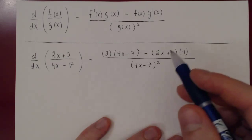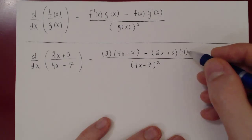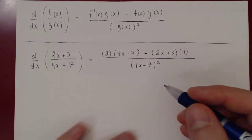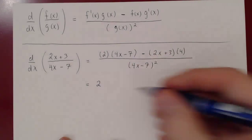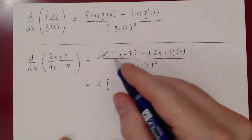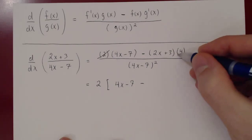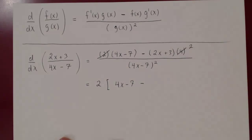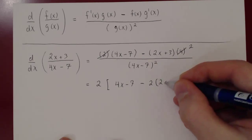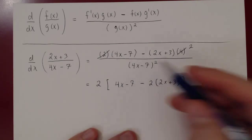On the numerator we have a difference of two terms. Before multiplying out, we can factor — it's not much, but we can factor the 2. So we'll have 2 times: factoring 2 from the first term leaves (4x − 7), and factoring 2 from 4 leaves 2, so minus 2 times (2x + 3), all over (4x − 7) squared.